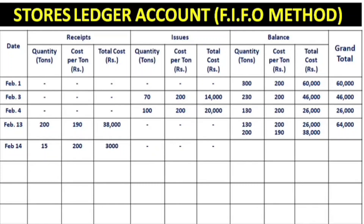After adding the return to the balance: 130 plus 15 equals 145 tons at 200 rupees each, totalling 29,000, plus 200 tons at 190 rupees, totalling 38,000. The grand total balance is 67,000.